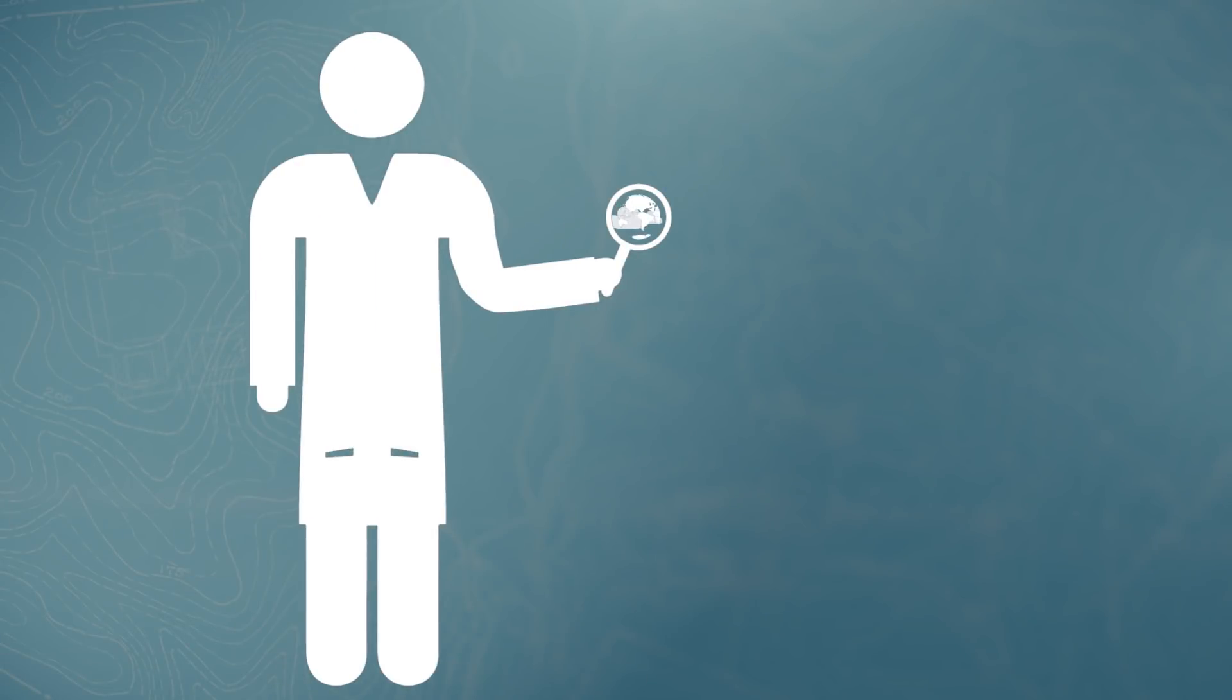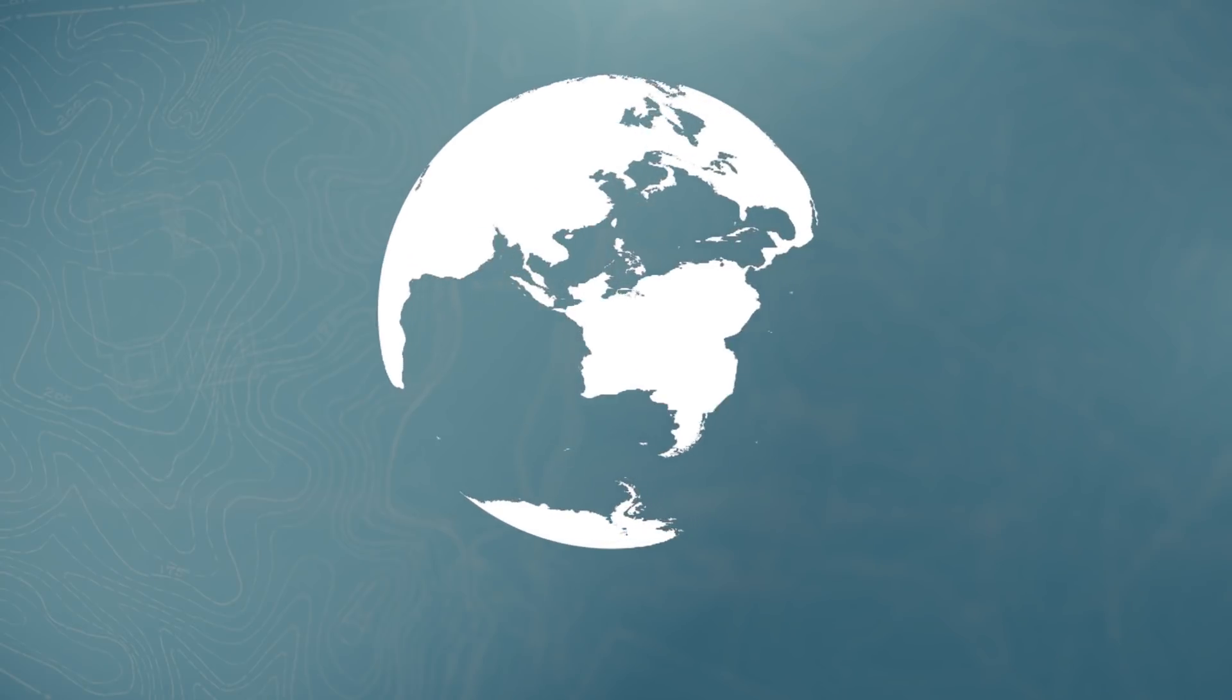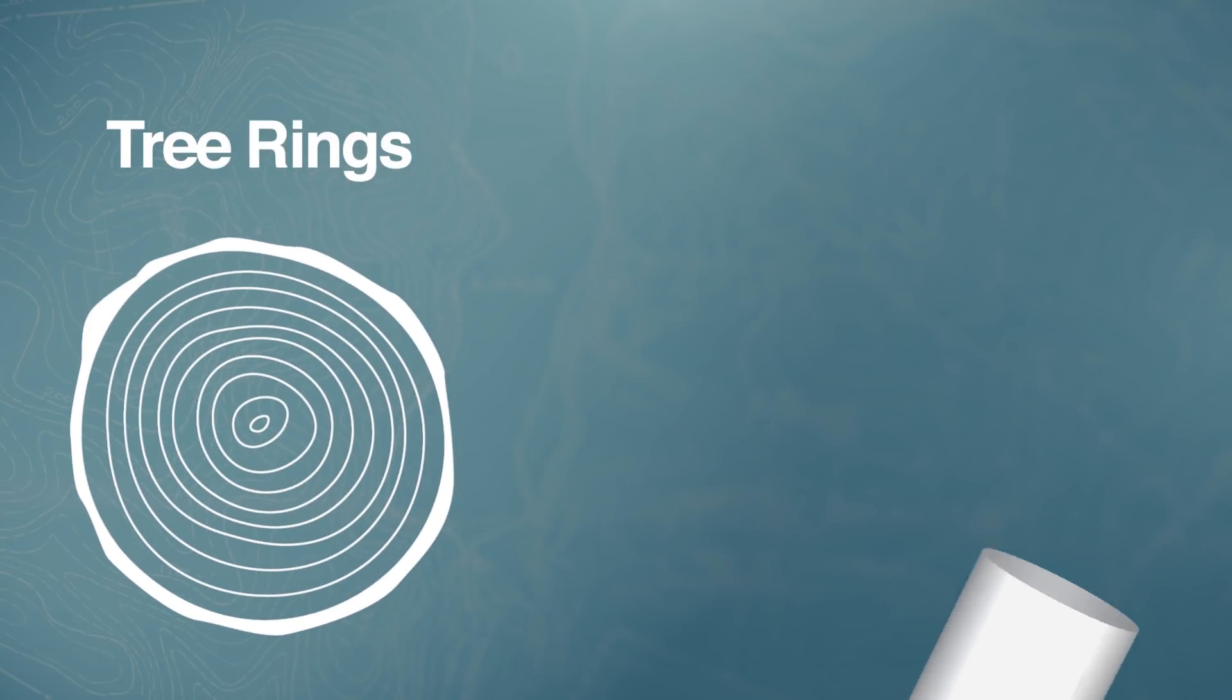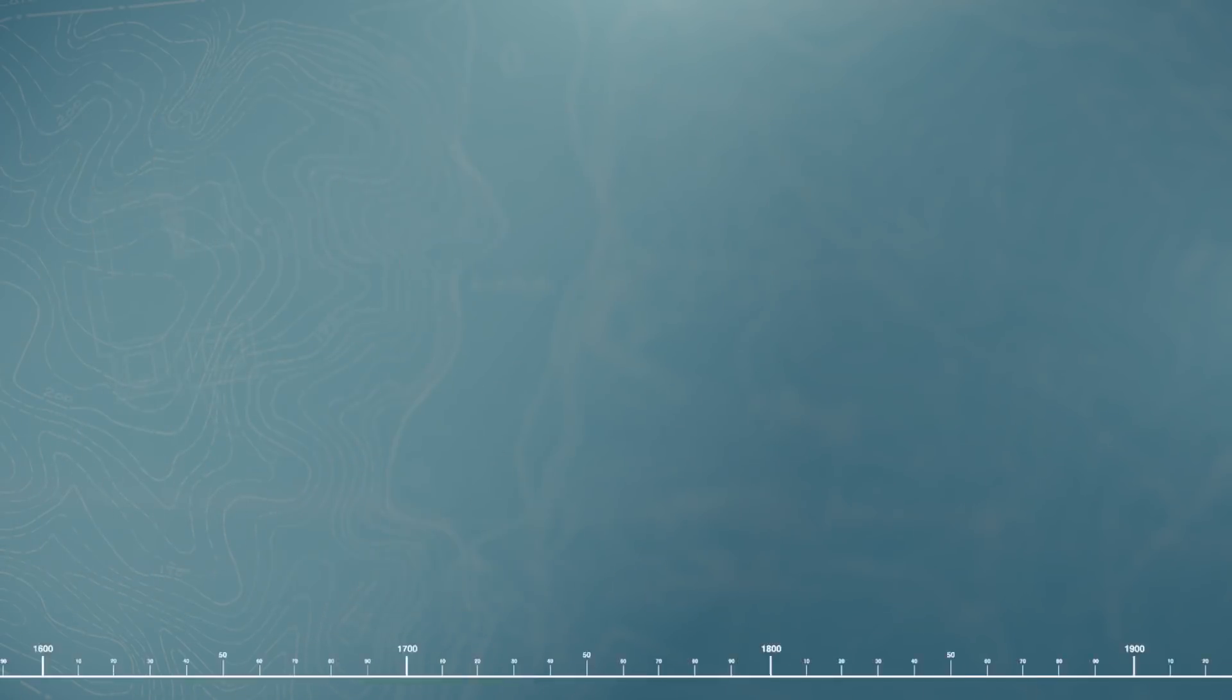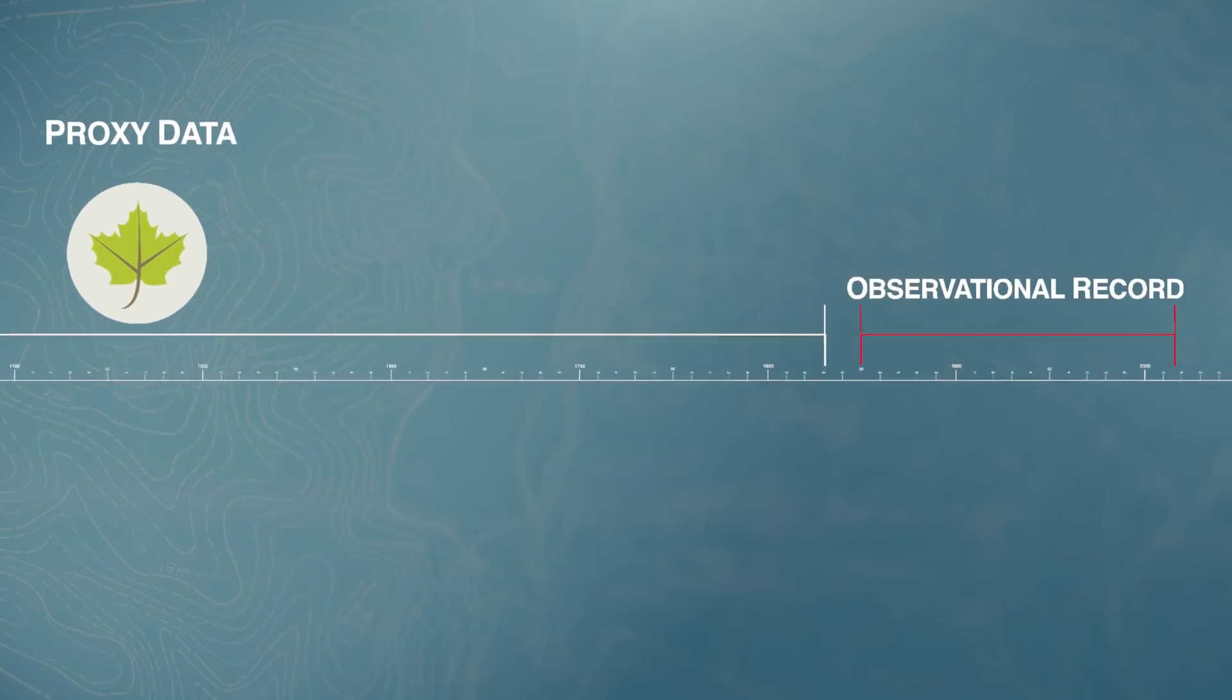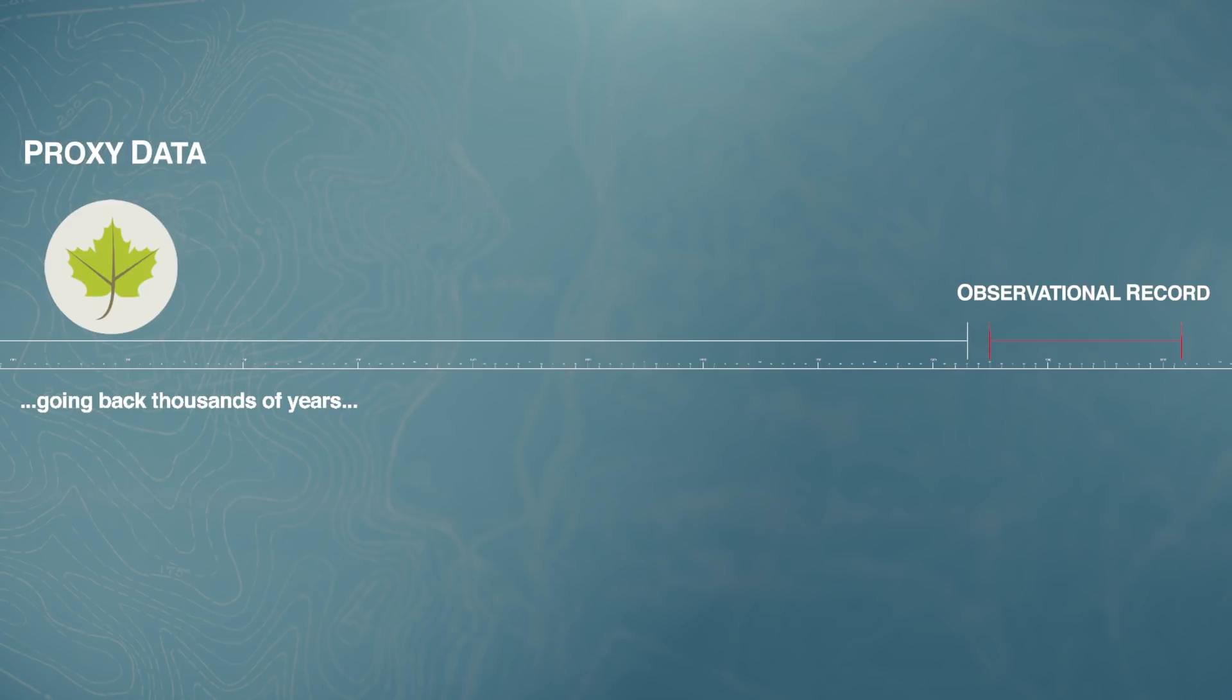Scientists try to gain a greater historical understanding of the climate by examining geological material that records historical changes in our climate. Tree rings and ice core samples are two examples of geological sources which scientists examine in order to obtain proxy data. Proxy data are simply historical readings extracted from nature, potentially providing estimated changes to our climate going back thousands of years before recent records began.